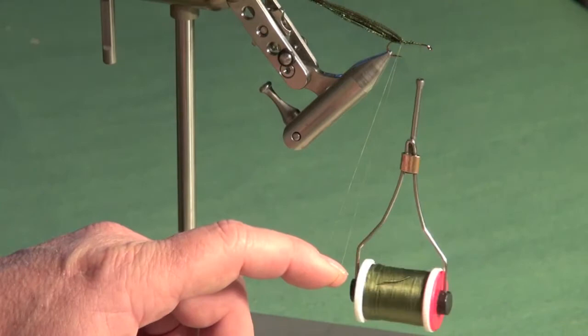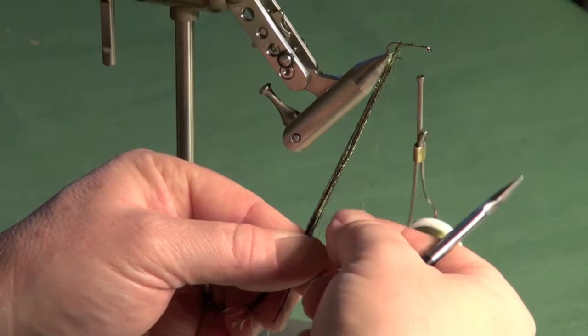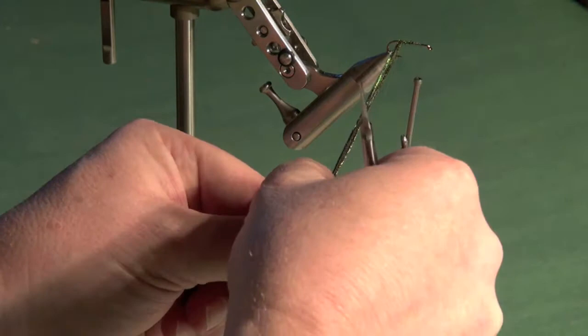Now, we're going to take our peacock herl, come down, and I've stroked the left side of the thread loop together with the peacock herl. So I'll just use my left hand here to help keep everything together. Just exaggerating some of the movements here so you can see what I'm doing.